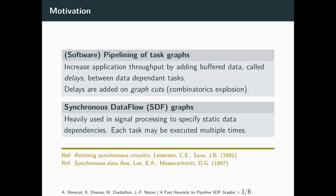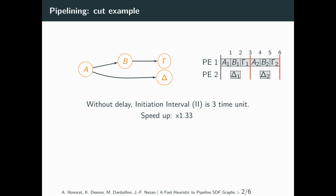Let's see a small example. With the task graph on the left, without any delay, we obtain the schedule presented on the right. The Initiation Interval is three time units, which gives a speedup equal to 1.33 relatively to the sequential time. The schedule is repeated indefinitely, here two times.